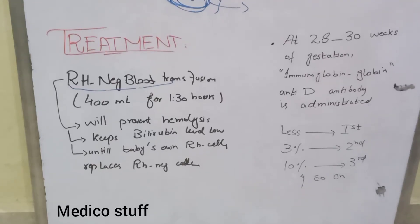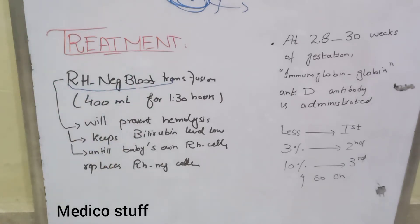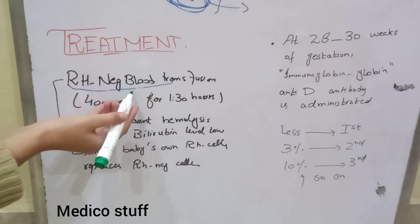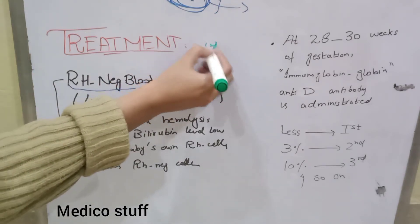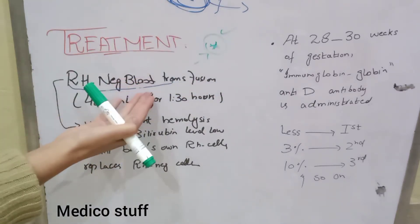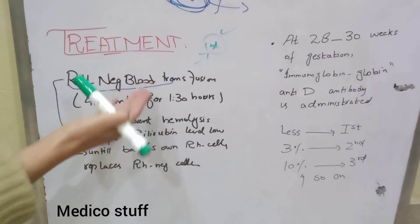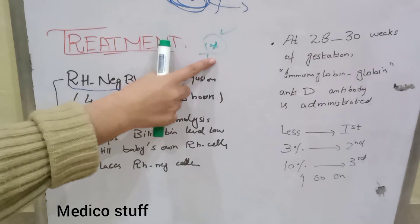Now we will see what is the treatment of the baby born with erythroblastosis fetalis. The only treatment is to transfuse RH negative blood. Why RH negative blood, when the baby is RH positive? We have to transfuse RH negative blood into the baby's circulation because the baby's circulation is still containing antibodies against the RH antigen.